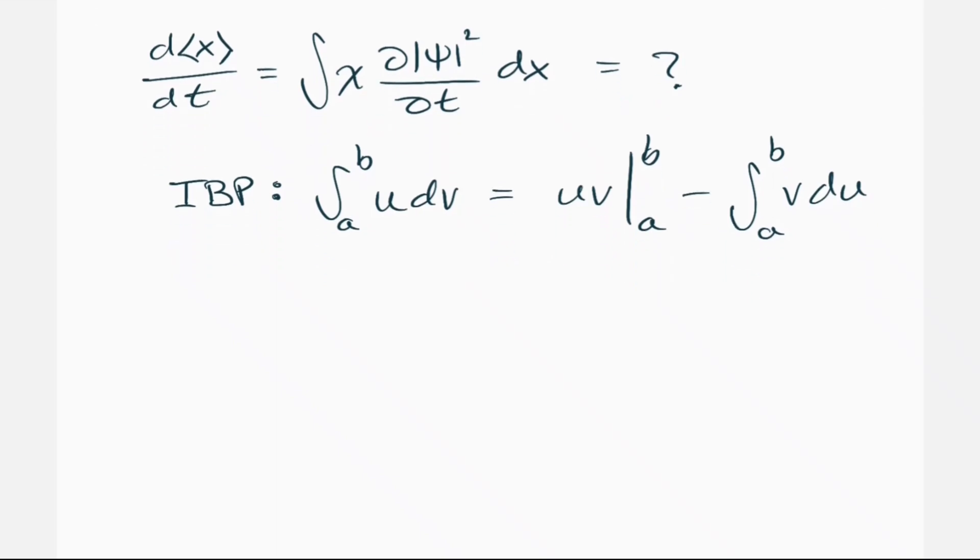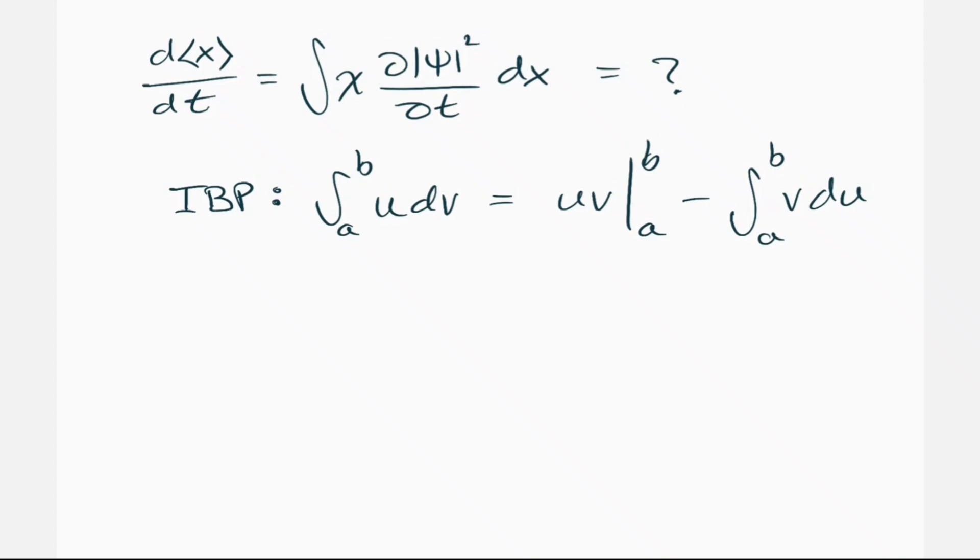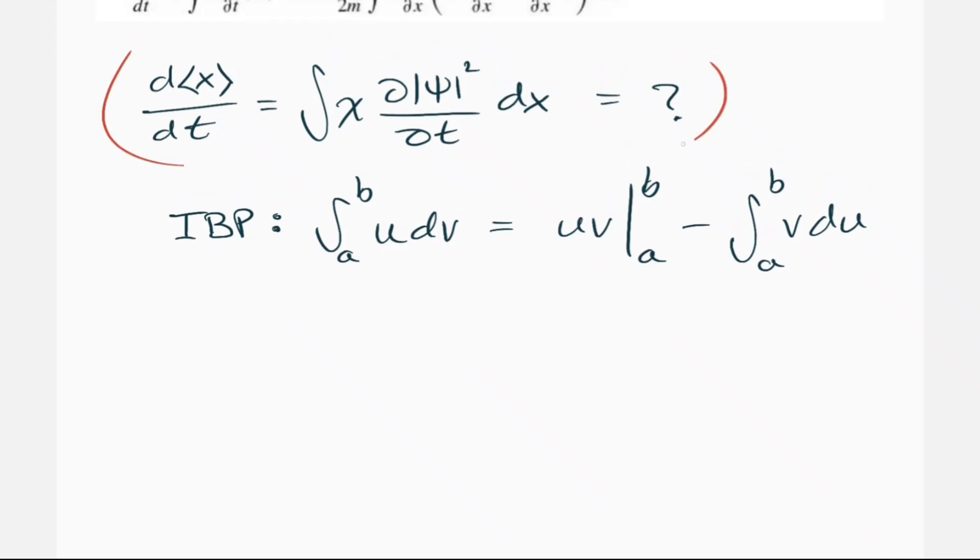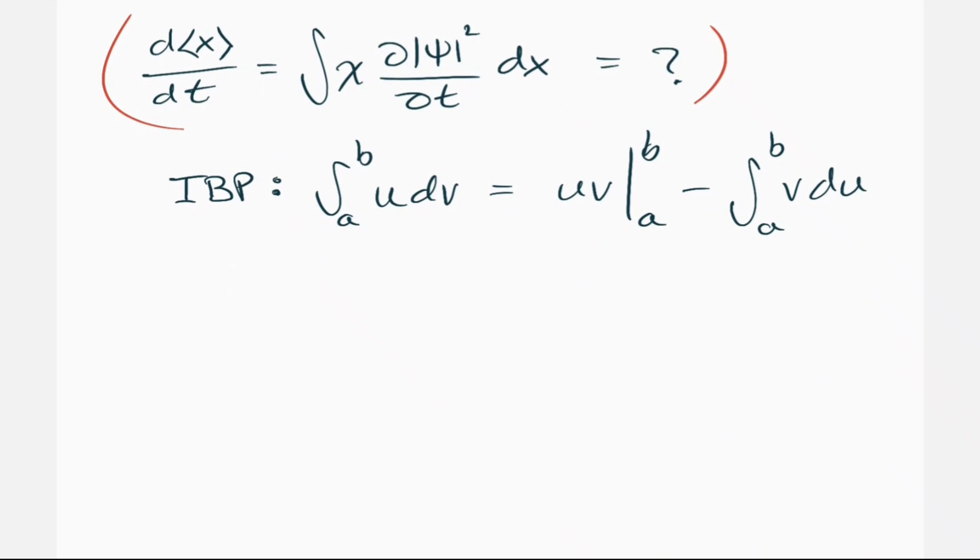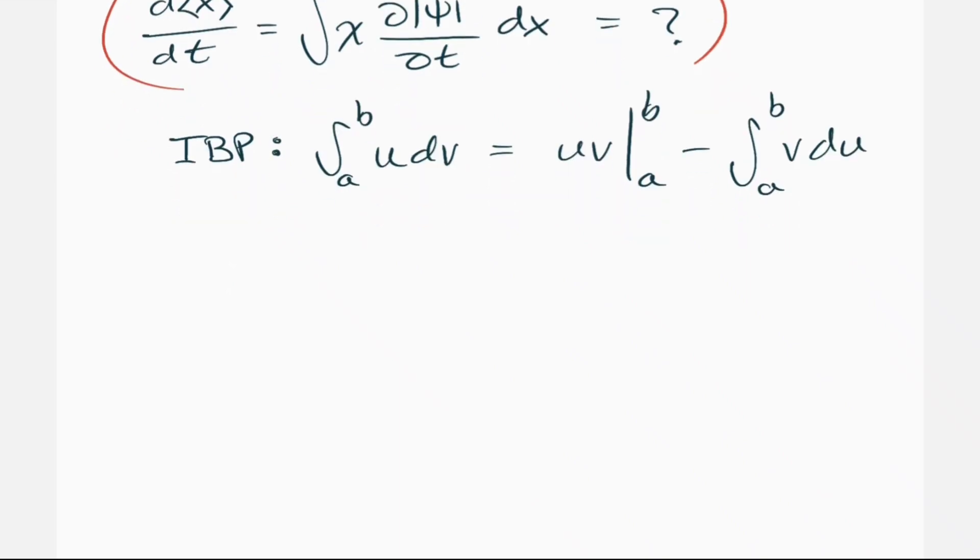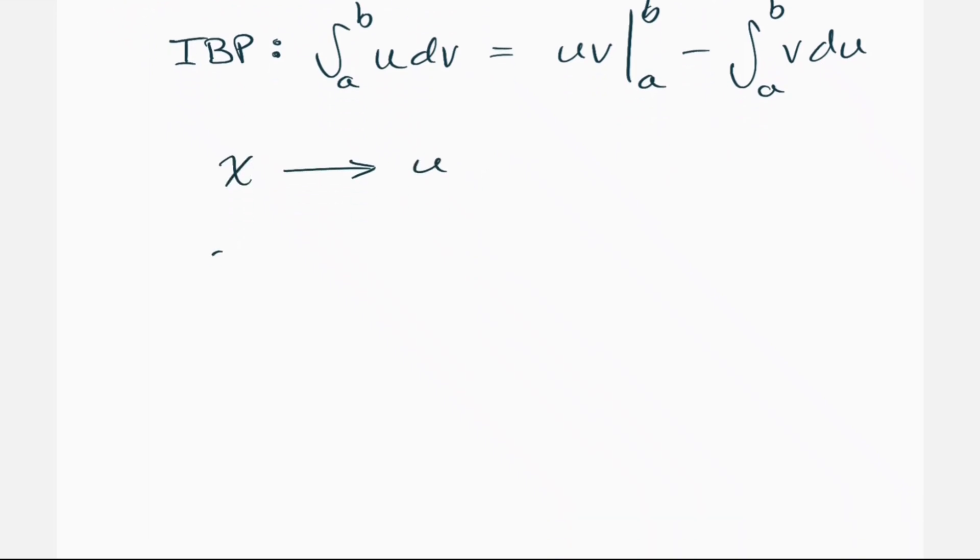Now if we take a look at this integral that we have up here. So when we do it, if we were to try to do integration by parts on this, well you would say, okay, x is kind of like my u. And then my d psi squared dt is kind of like my dv.